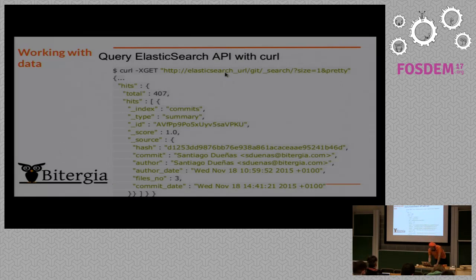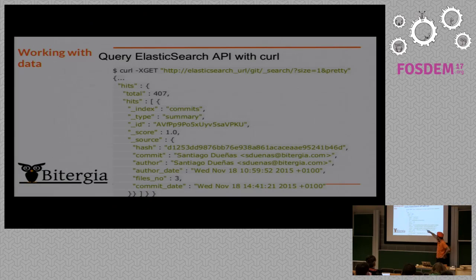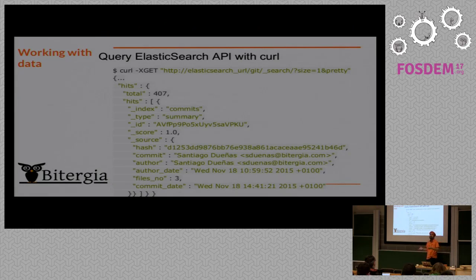You can use cURL or similar tools to access the data — the main thing is knowing the Elasticsearch query language, which is not that difficult. Here is a very simple query: this is the Elasticsearch instance, this is the git index to get information about git, and this is the search query — in this case, give me one result and prettify the JSON so humans can read it. You get the size of the index — in this case 407 — and one example document. For a commit you get the hash, author, author date, commit date, and more, basically what you'd get from git log with all parameters. If you want to know how many commits a person made, you just substitute the query for that field.